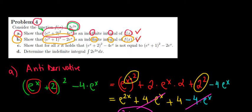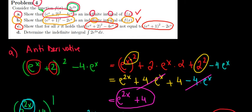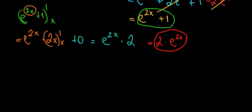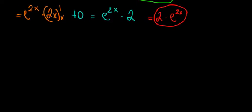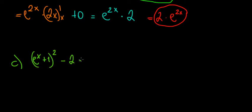So we have proved this one more time. Now let's solve part c: show that for all x it holds that these two expressions are not equal. Let's write them side by side. In part c we will compare e to the power of x plus 1, all squared, minus 2 times e to the power of x, against e to the power of x plus 2, all squared, minus 4 times e to the power of x.